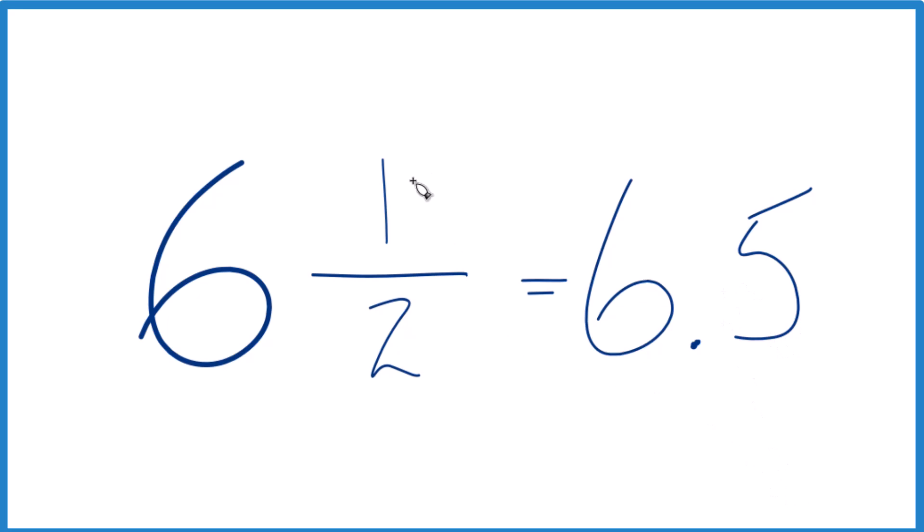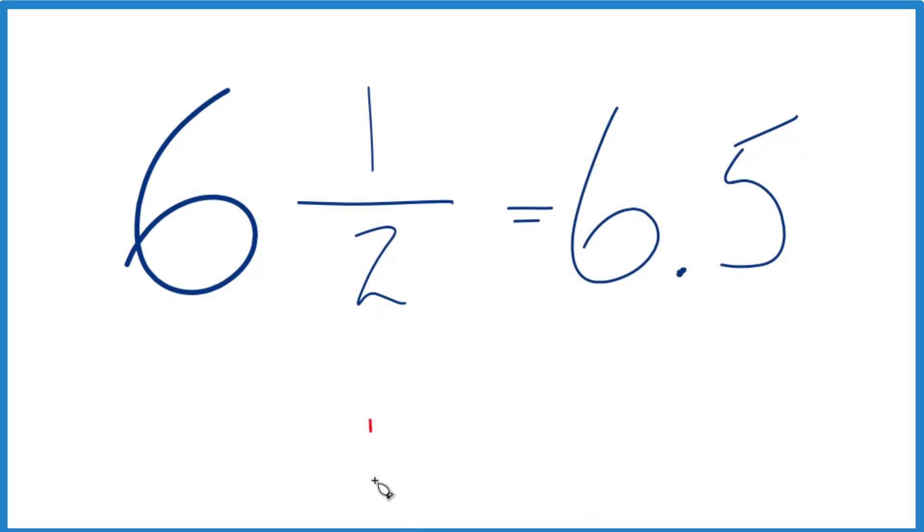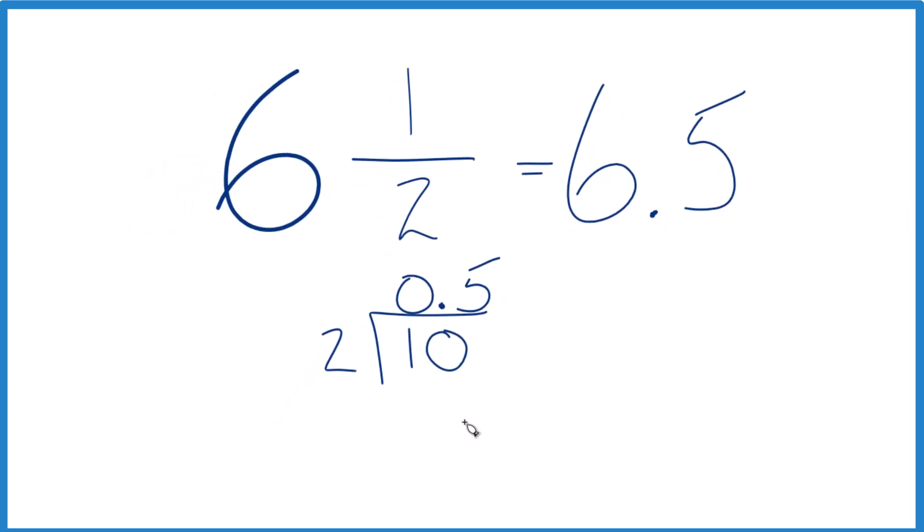If you didn't know that, you could convert one-half to a decimal by hand. We have one divided by two. Here's one. We want to know how many times two goes into one. It doesn't, but if we call this 10, we put a zero with a point here. Now, five times two, that's 10.